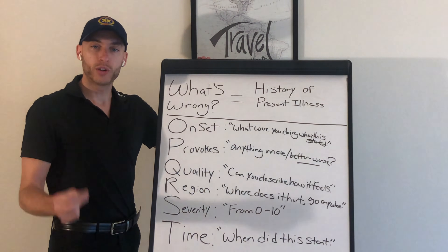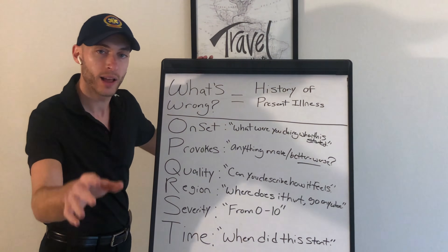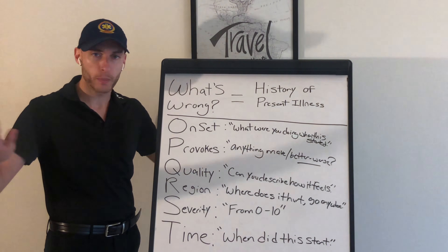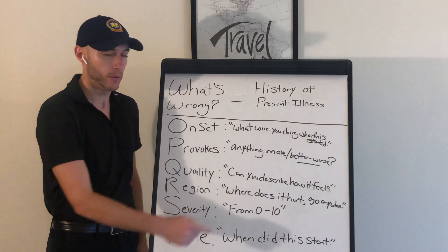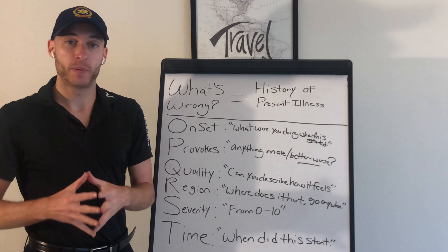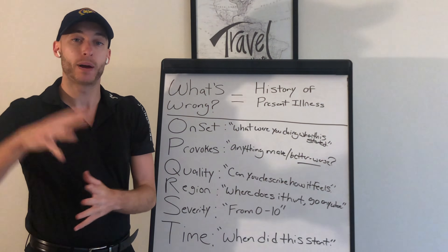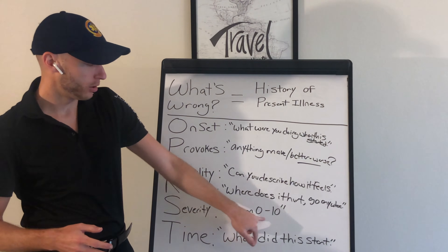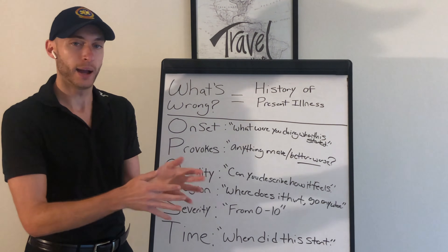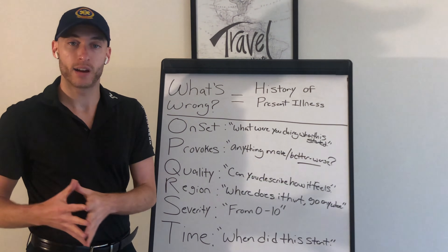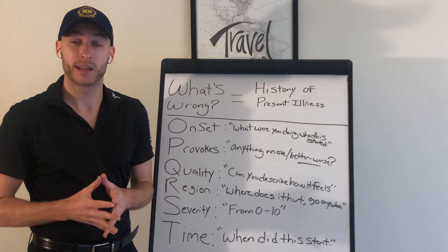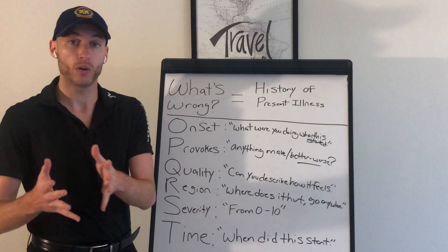S is severity — from zero to ten, ten being the worst pain of your life, zero being no pain at all. You can also ask: before we got here, what was the pain when you first called, and where is it now? Did it get better or worse? The pain scale lets you track the patient's pain over time. If the pain goes from ten to seven to five, they're going in the right direction. If it goes from eight to nine to ten, they're going in the wrong direction.